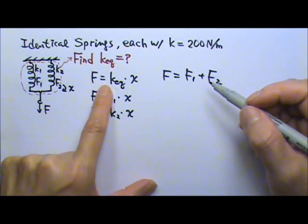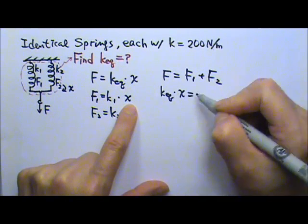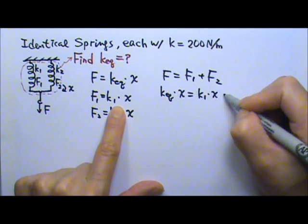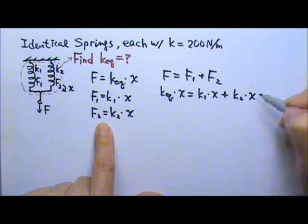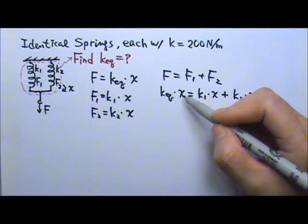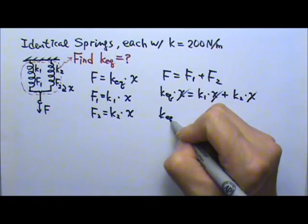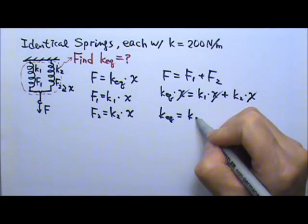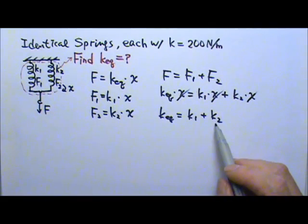So F equals F1 plus F2. Using these equations: F equals K equivalent times x, F1 equals K1 times x, and F2 equals K2 times x. All the x's are the same, so I can cancel x and get the equation for the equivalent spring constant when two springs are in parallel: K equivalent equals K1 plus K2.